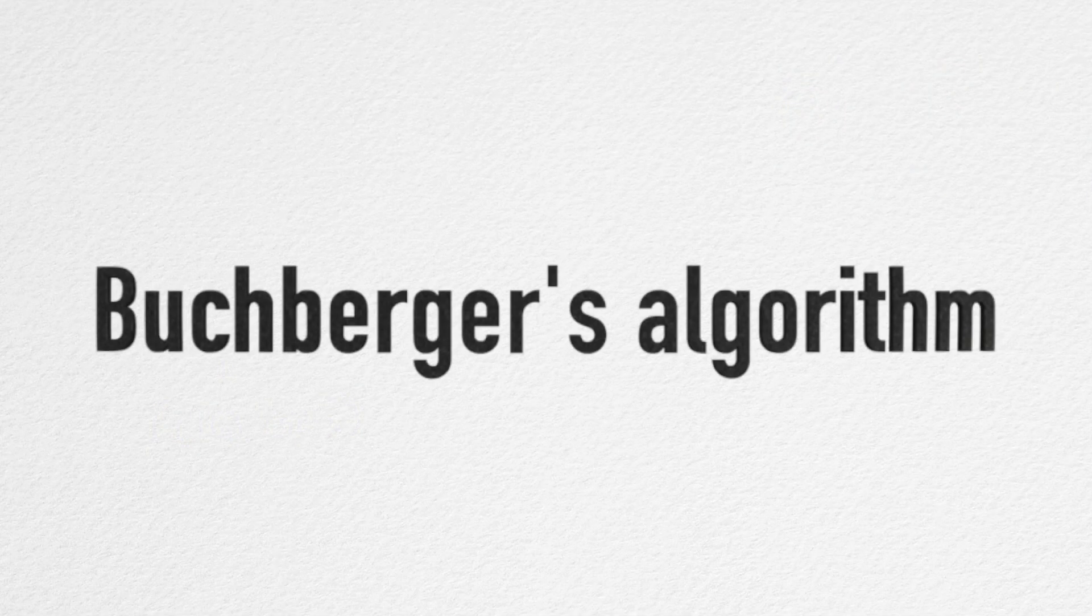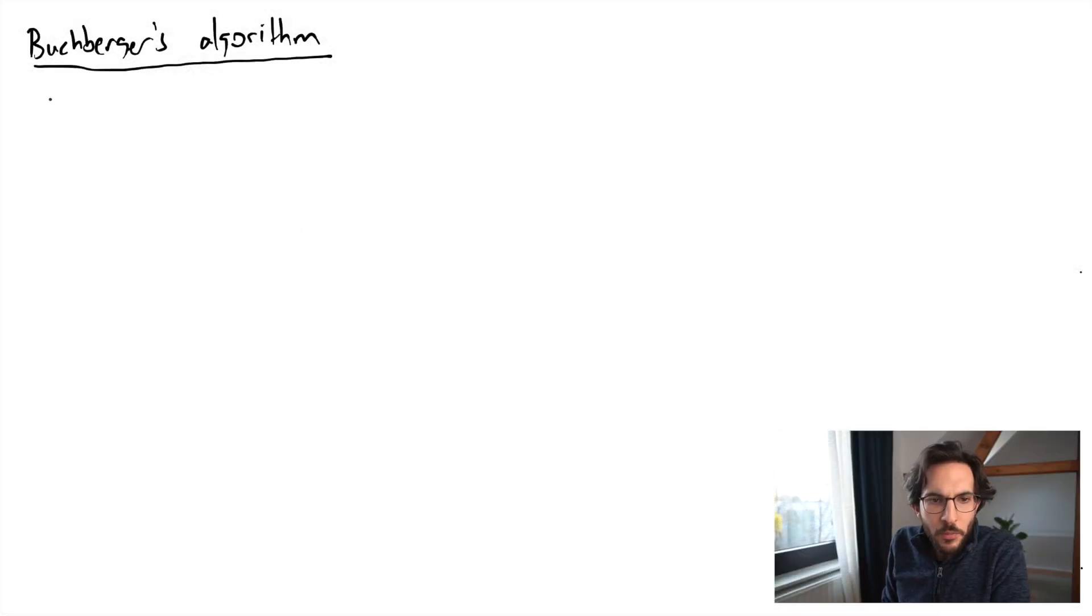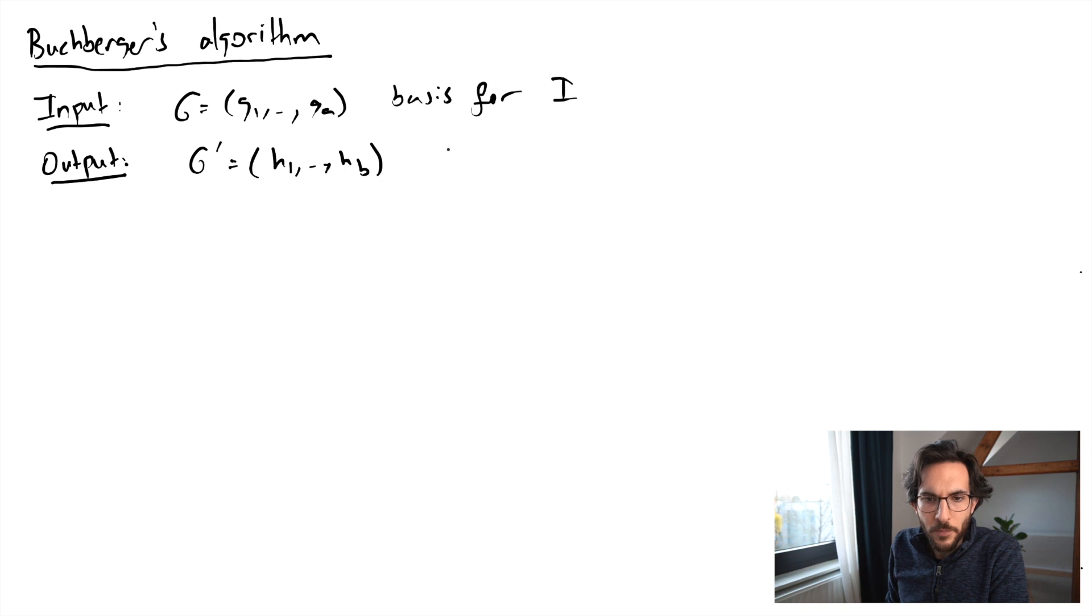Let's write down what we just discussed in pseudocode. You give me a basis for an ideal, and I'm going to give you another basis G' which will be a Gröbner basis for I. The way I'm doing it is I'm going to extend your basis so that hi will be gi for i less than or equal to a. So all these first elements remain untouched, I just add extra elements completing your basis to a Gröbner basis.